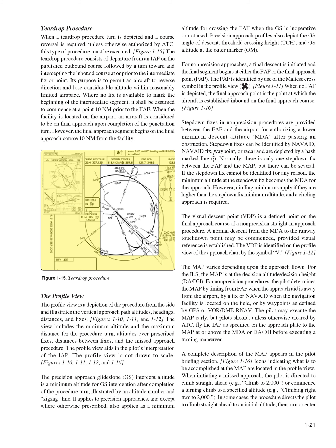The missed approach point, MAP, varies depending upon the approach plan. For the ILS, the MAP is at the decision altitude/decision height, DA/DH. For non-precision procedures, the pilot determines the MAP by timing from the FAF when the approach aid is away from the airport, by a fix or NAVAID when the navigation facility is located on the field, or by waypoints as defined by GPS or VOR/DME. The pilot may execute the MAP early, but should, unless otherwise cleared by ATC, fly the IAP as specified on the approach plate to the MAP at or above the MDA or DA/DH before executing a turning maneuver. Icons indicating what is to be accomplished at the MAP are located in the profile view. When initiating a missed approach, the pilot is directed to climb straight ahead, for example climb to 2,000, or commence a turning climb to a specified altitude, for example climbing right turn to 2,000. In some cases, the procedure directs the pilot to climb straight ahead to an initial altitude, then turn or enter a climbing turn to the holding altitude.